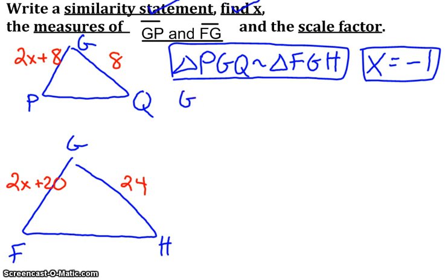Well, GP is on the smaller triangle. It looks like it was represented by 2X plus 8. And we found X to be negative 1, so I'm going to replace the X with negative 1. And let's see, what do we get? 2 times negative 1 is negative 2. Negative 2 plus 8 is 6. So it looks like GP is 6 units long.